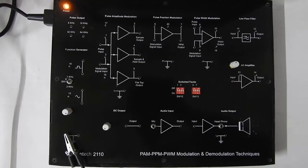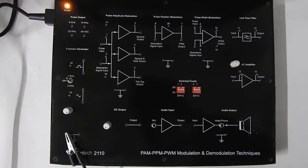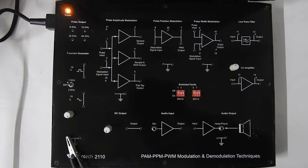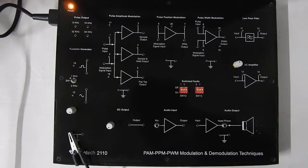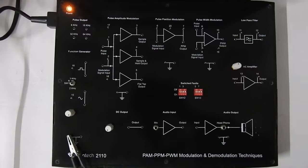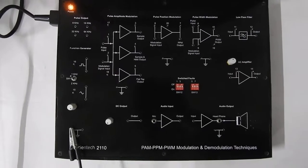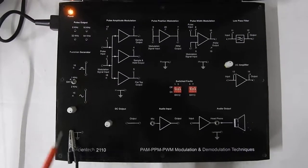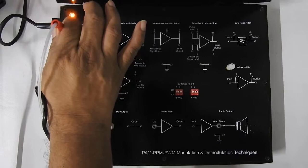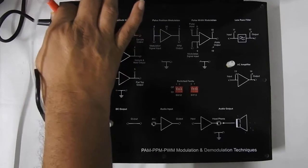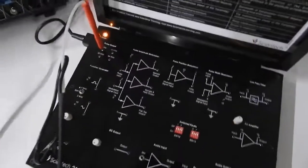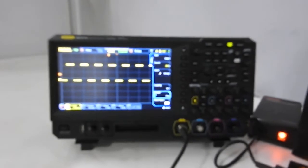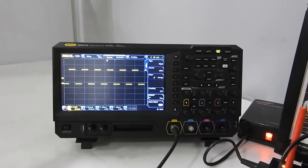In case of PAM, PWM and PPM, the carrier signal is nothing but a pulse. I am disconnecting the oscilloscope and this is a pulse output of 8 kHz. Now you can see that we have an 8 kHz pulse output signal which we will use as a carrier signal.